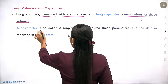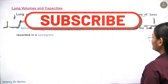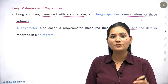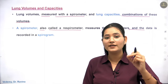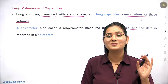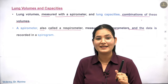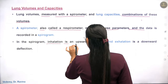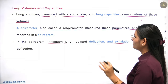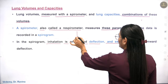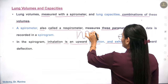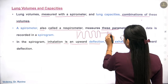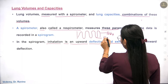The spirometer, also called a respirometer, measures these parameters and the data is recorded in a spirogram. Just as we saw waves in ECG, the spirogram also has waves. In the spirogram, inhalation is an upward deflection and exhalation is a downward deflection. The upward direction is your inhalation, and the downward direction is your exhalation.